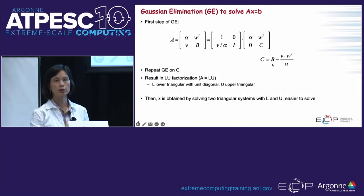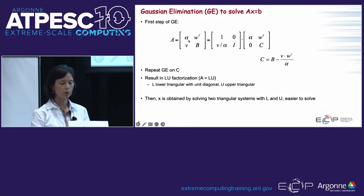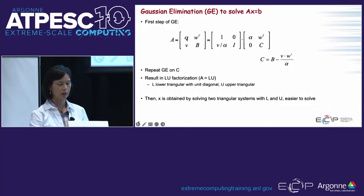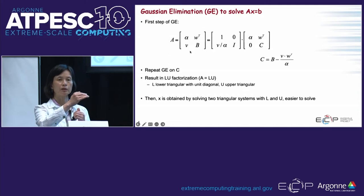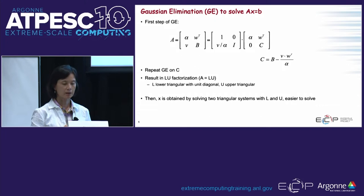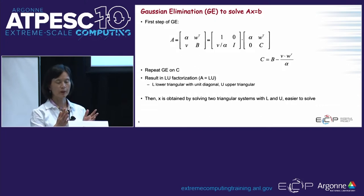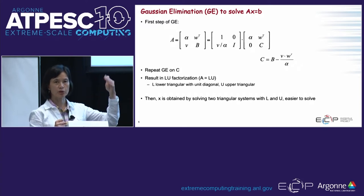If the pivot is very small, your solution will not be accurate. This is why people talk about pivoting — we try to avoid small pivots. One trick is partial pivoting: down the column, pick the largest element, swap it to the pivot diagonal position, and then do the update.